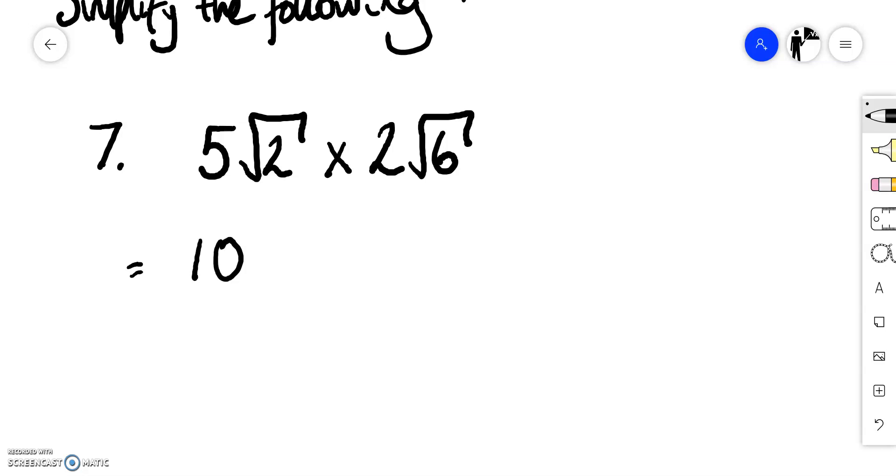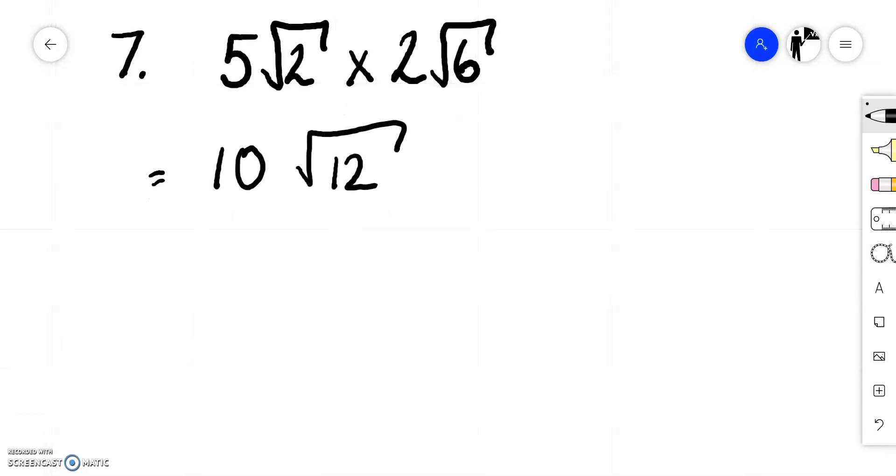So this is going to give me 10 root 12. Here I've got that 5 times 2 is 10 then I'll combine these two surds together. I can simplify this a bit further because there is a square number that goes into 12. That's 4.